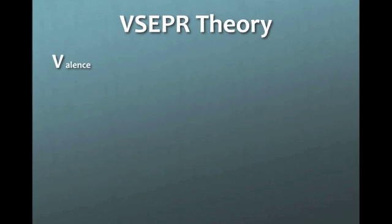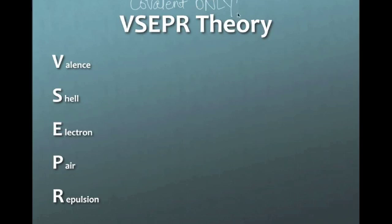VSEPR stands for valence shell electron pair repulsion. Now what the heck does that mean? Well in every molecule, and this only applies to covalent compounds. Covalent compounds only. You do not use VSEPR theory on ionic compounds, you use lattice structure on ionic compounds.